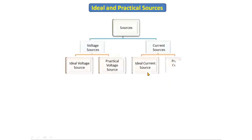Hello everyone, today we are going to discuss about the ideal and practical sources. If you see the classification of sources, there are two types: voltage source and current source. The voltage sources are classified into ideal voltage source and practical voltage source. Similarly, the current source is also classified into ideal current source and practical current source.